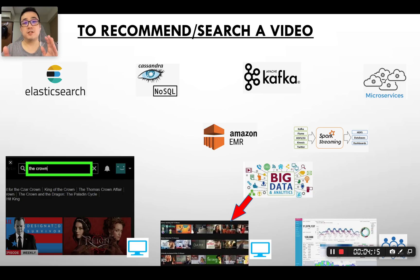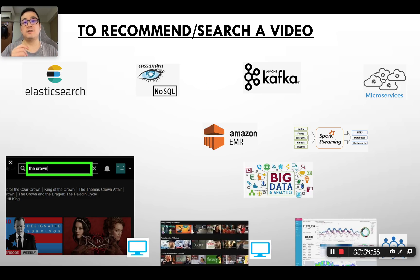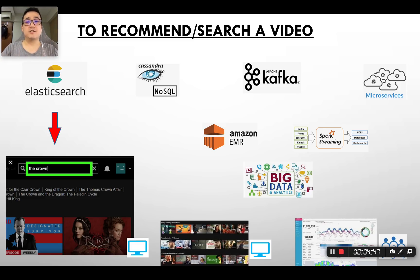This is how video recommendation on Netflix works. You might also ask: once a user wants to perform a search, what is the back-end architecture? When Kafka streams the logs, it's going to stream a copy of the messages to a NoSQL database, for example Cassandra. Cassandra is integrated with Elasticsearch, which supports the inverted index — ideal for search engine use. On the back-end, Elasticsearch is the key to the video search function.